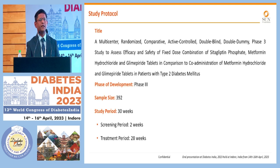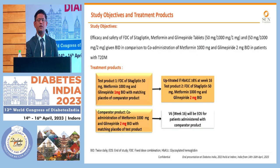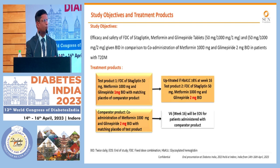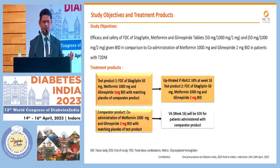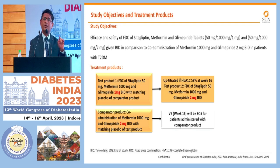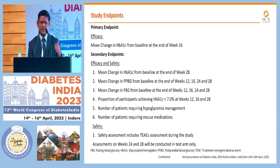A total of 392 patients are being enrolled in this study and the duration will be 30 weeks. The study objectives, as highlighted, are efficacy and safety — safety being of paramount importance in this Phase 3 study. The test product is the FDC combination containing Sitagliptin 50 mg, Metformin 1000 mg, and Glimepiride 1 mg. These are the efficacy and safety endpoints for the study.